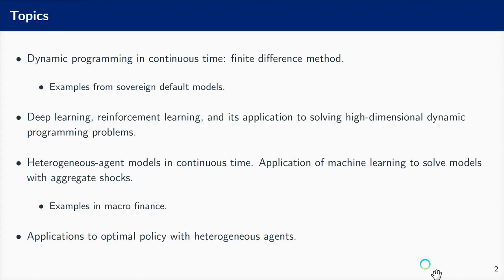First, I will discuss dynamic programming in continuous time. I will have a gentle introduction to the main ideas of continuous time in stochastic environments, and show how one can, for instance, write a Hamilton-Jacobi-Bellman equation and use a finite difference method to solve such an equation. We will illustrate our derivations with examples from sovereign default models.